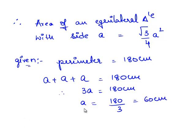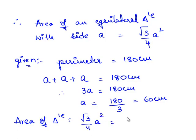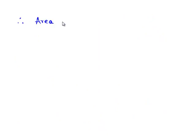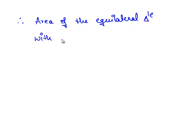Now we substitute the value of A in the formula for the area of an equilateral triangle. We have the area of the triangle equal to (√3/4)·A², which is equal to (√3/4) times 60 squared. Therefore, the area of the given equilateral triangle with perimeter 180 centimeters is equal to 900√3 centimeters squared.